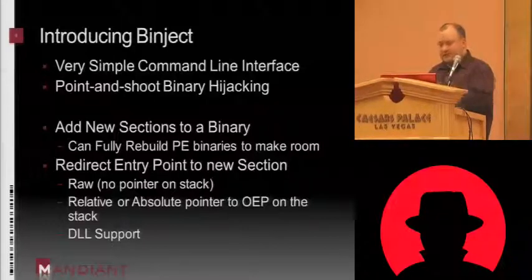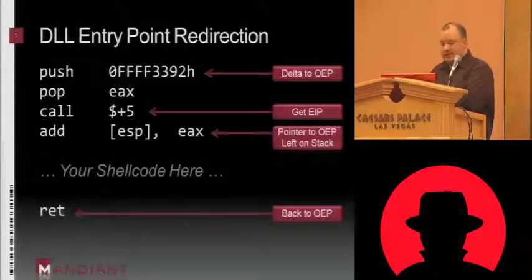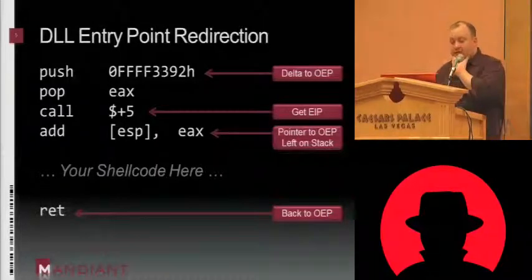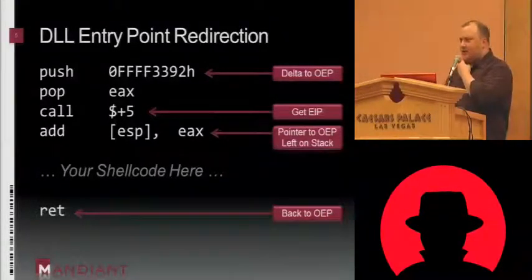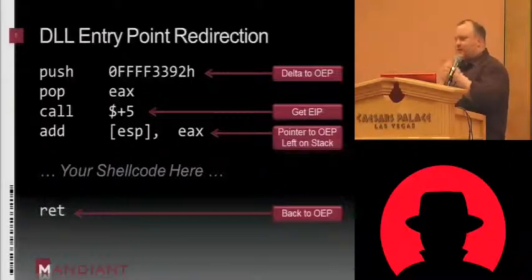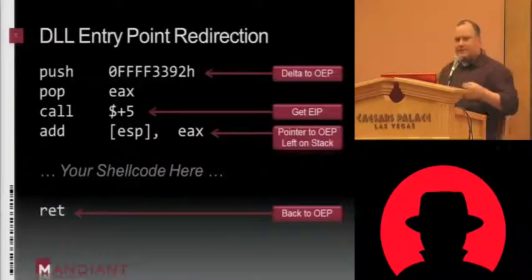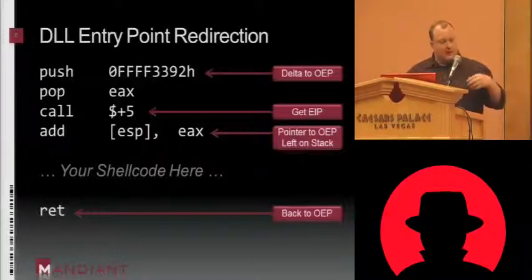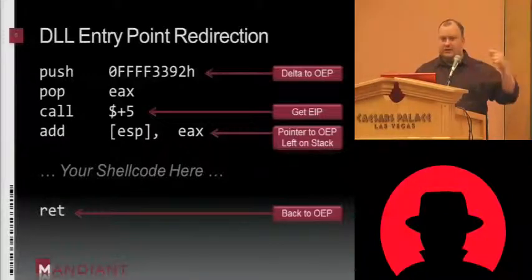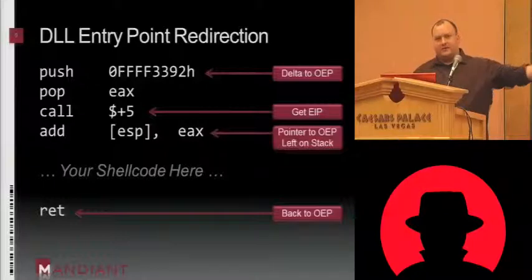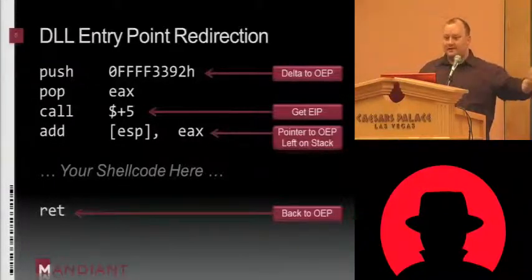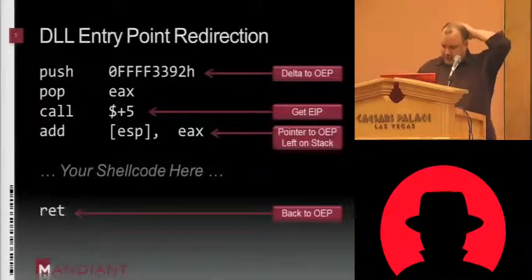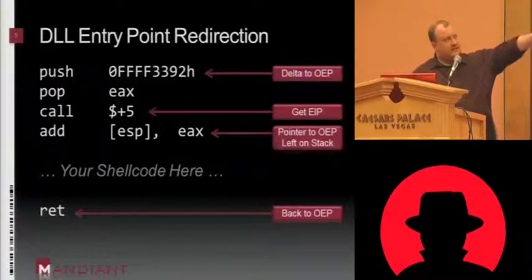It also supports entry point hooking. This is an entry point hook stub for a DLL. When you have a DLL, the problem is it's going to be loaded anywhere in memory — you have no way to guarantee where it will be loaded. With an entry point hook, we want our code to run first and then at some point jump back to the original code so that the DLL works as intended. I pre-pin this little sequence of instructions. What I do is I take the DLL delta — the difference between the memory address right after the call instruction and where the original entry point is.